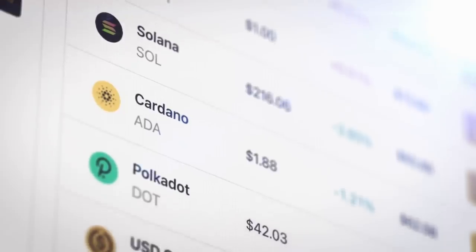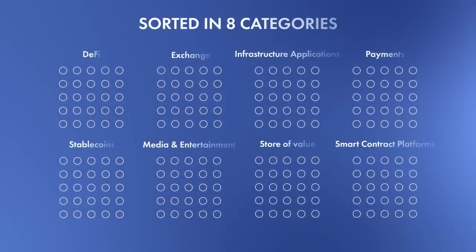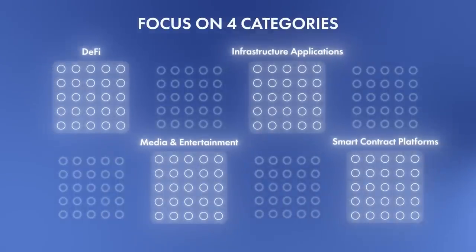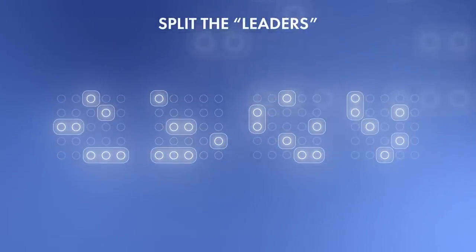Similar to the world of equities, digital asset classification indexes enable you to invest in certain parts of the digital assets markets based on use case. We've taken the top 200 coins and sorted them into eight categories, with each coin fitting into one. We then focused on the four categories that had the most compelling investment thesis and split the leaders out into a subset of their own.